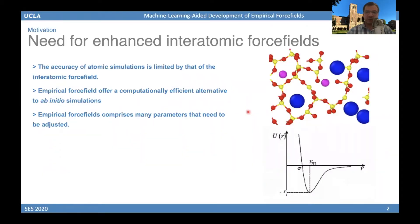The reason we need empirical force fields to simulate glasses and other materials is that if you want to simulate a given material by Monte Carlo simulation or molecular dynamics, everything relies on the accuracy of the underlying potential energy. One option is to use ab initio simulation, which can be very accurate but extremely computationally expensive. So what we are trying to do is use machine learning to develop empirical force fields that are fully analytical, very fast, and computationally efficient to calculate the energy between atoms.